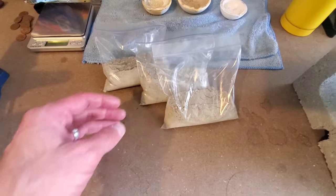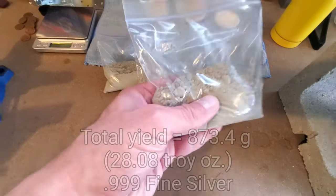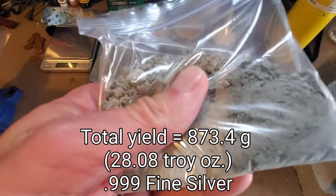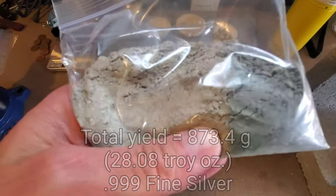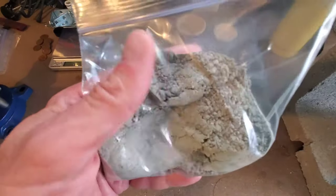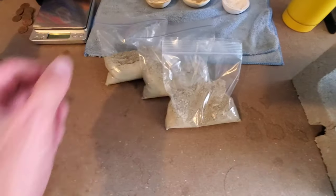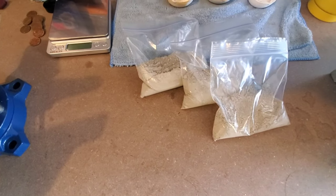All right, after the drying process, we're left with this fine silver cement or powder, which is 0.999 fine silver. The next step is going to be to melt this down into silver shot, making it easier to pour into some molds.